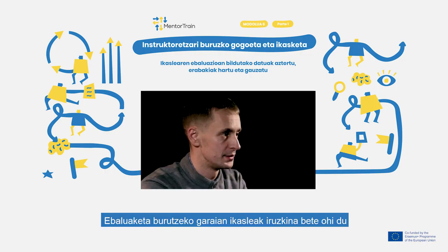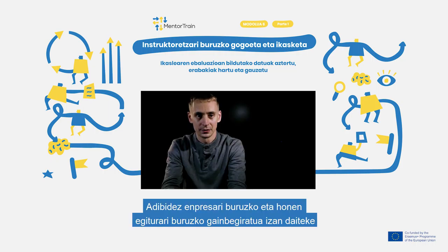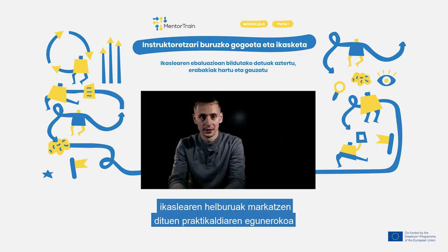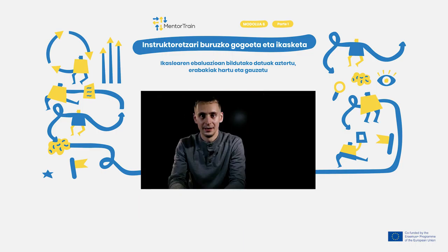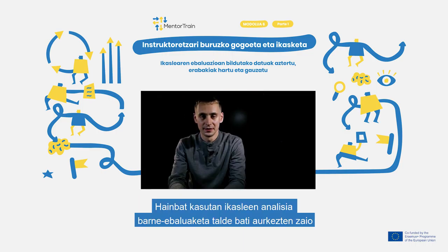To get an assessment, the student usually compiles a report. For example, it can consist of an overview and analysis of the chosen organization and its structure, a statement of the apprentice's goals, a daily diary of the apprenticeship, and a final analysis and self-reflection about one's experience. The report compiled by the student is usually supplemented by an evaluation form filled by the company's representative. In many cases, students present their analyses to an assessment committee.